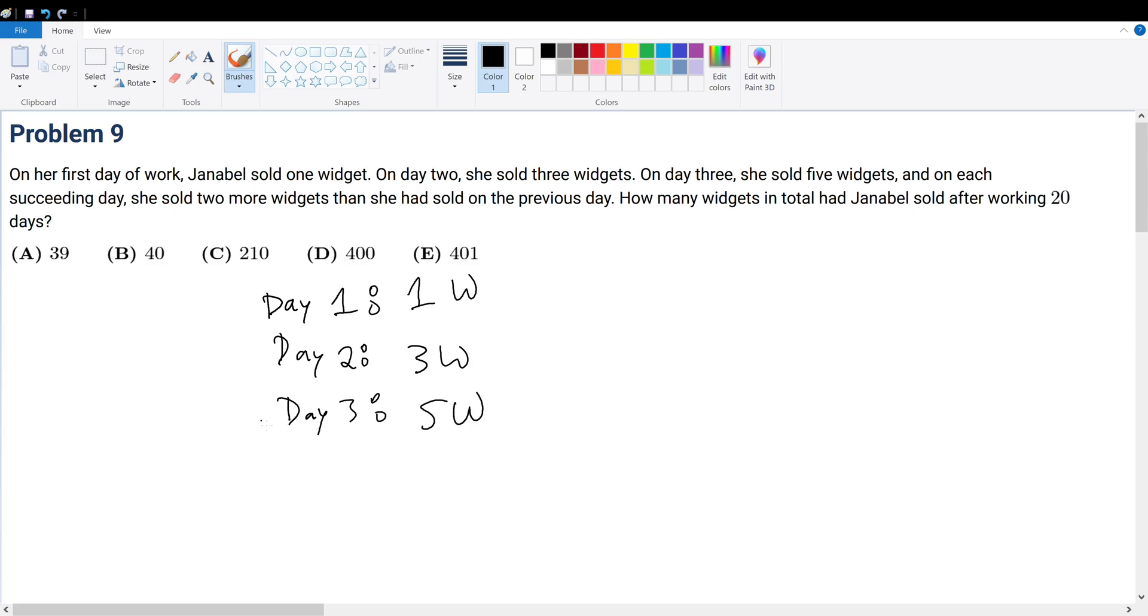On each succeeding day, she sold two more widgets than she had sold on the previous day. So the widgets on day number n will be equal to 2 plus the number of widgets sold on the previous day, n minus 1. How many widgets in total had Janabel sold after working 20 days?